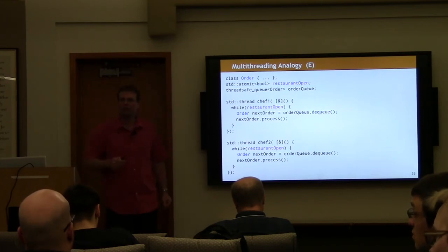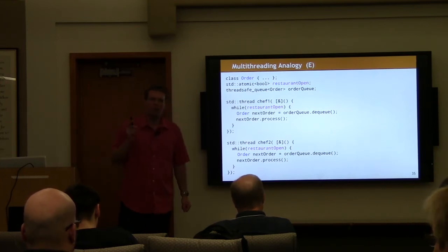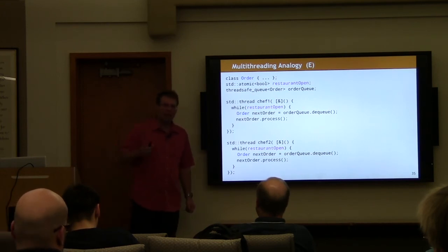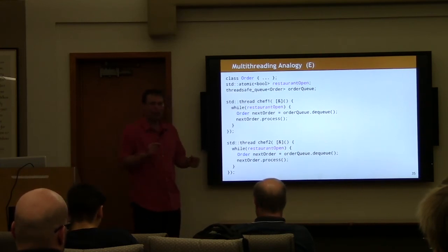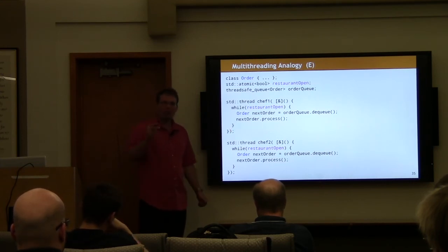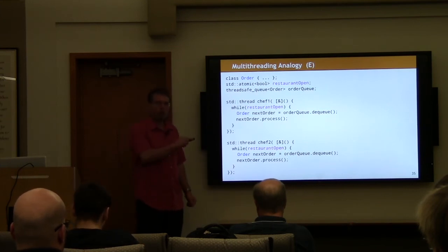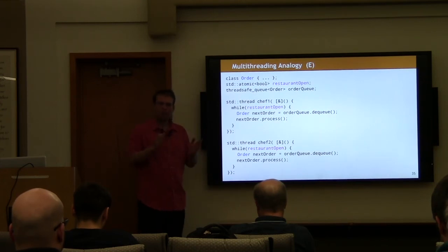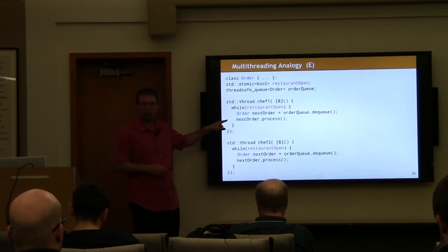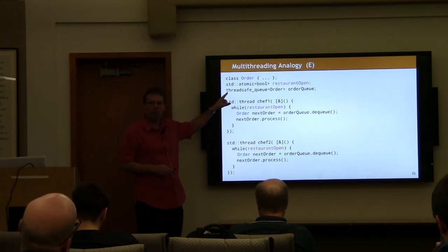Would declaring restaurant_open as volatile change things? The answer is no. In C++, the standard very explicitly says that although the compiler isn't allowed to reorder accesses to a volatile variable, you still have undefined behavior — because now you also need to be safe at the architecture level, not just the optimizer level. Volatile only protects you from the optimizer; it does not protect you from the underlying architecture. STD atomic guarantees you are protected from race conditions in both.